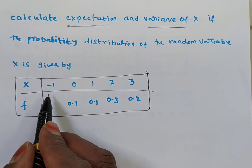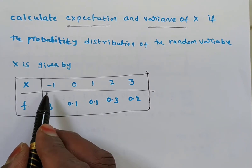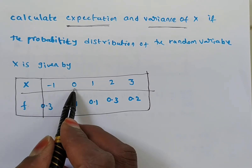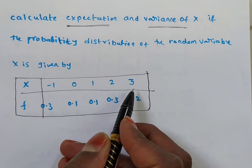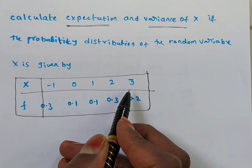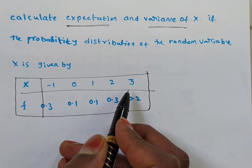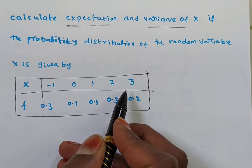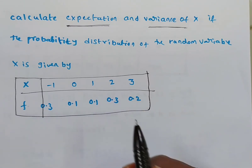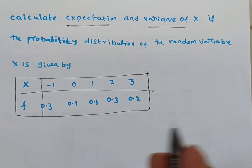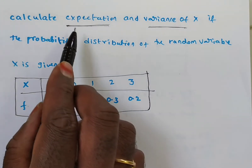you see the x values are given: minus 1, 0, 1, 2, 3. These are integers only, nothing but discrete numbers only. So which type of random variable is this? Discrete random variable only.